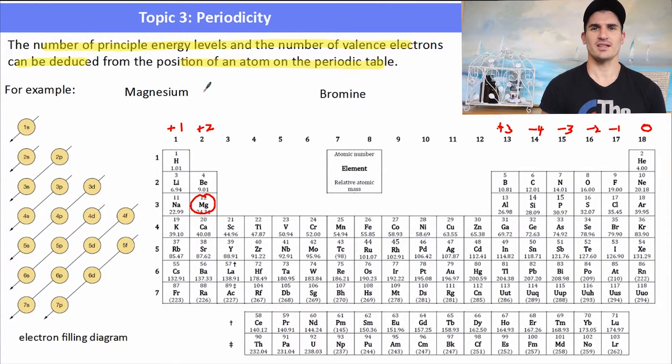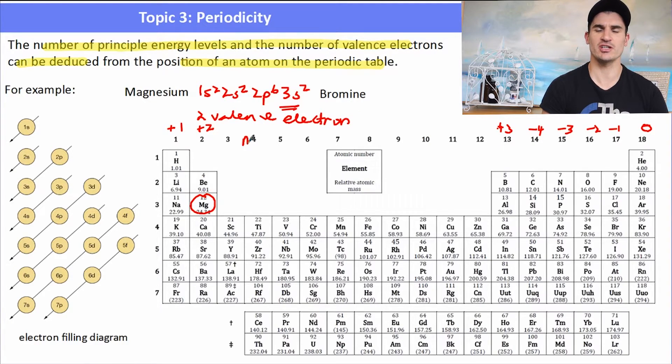Okay, so for instance, magnesium. The electron configuration of magnesium would be 1s2, 2s2, 2p6, 3s2. So 3s2 means it has electrons in the 3rd shell. Its principal energy level will be in the 3rd shell, and it has 2 valence electrons. So it has 2 electrons in the 3rd shell. So they occupy the shell with the most energy, and that means that magnesium, with 2 valence electrons, could form an Mg2+ ion.